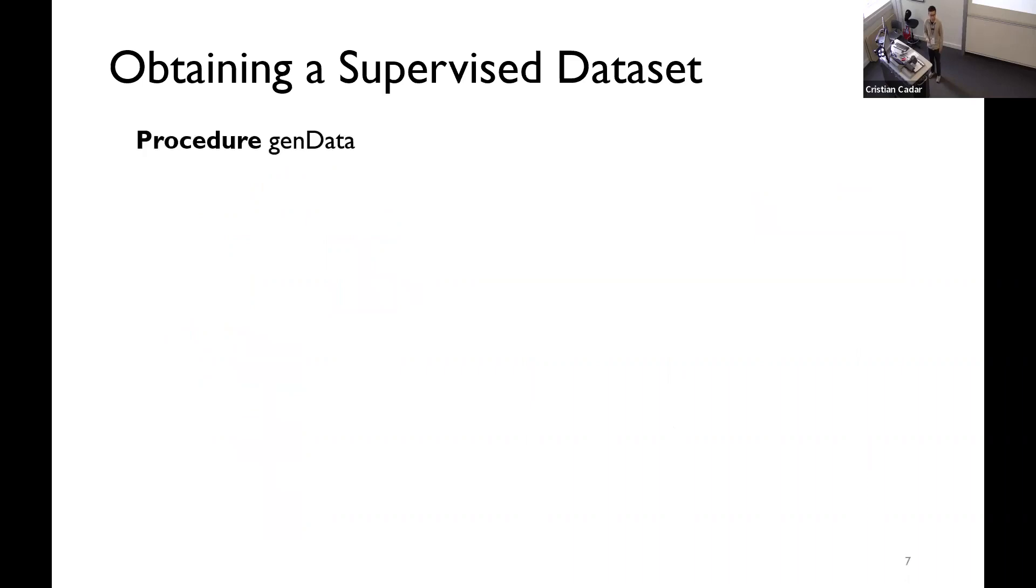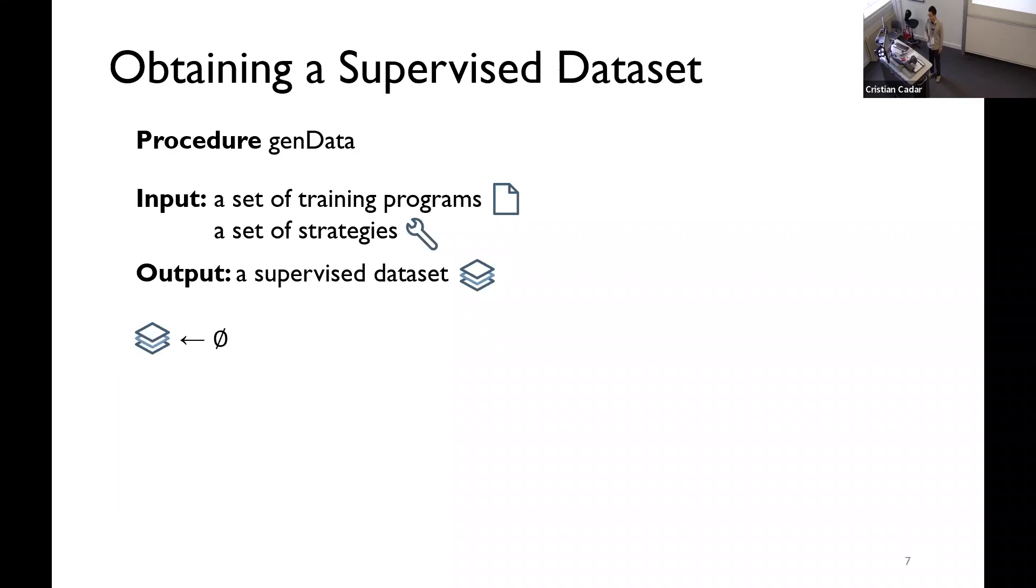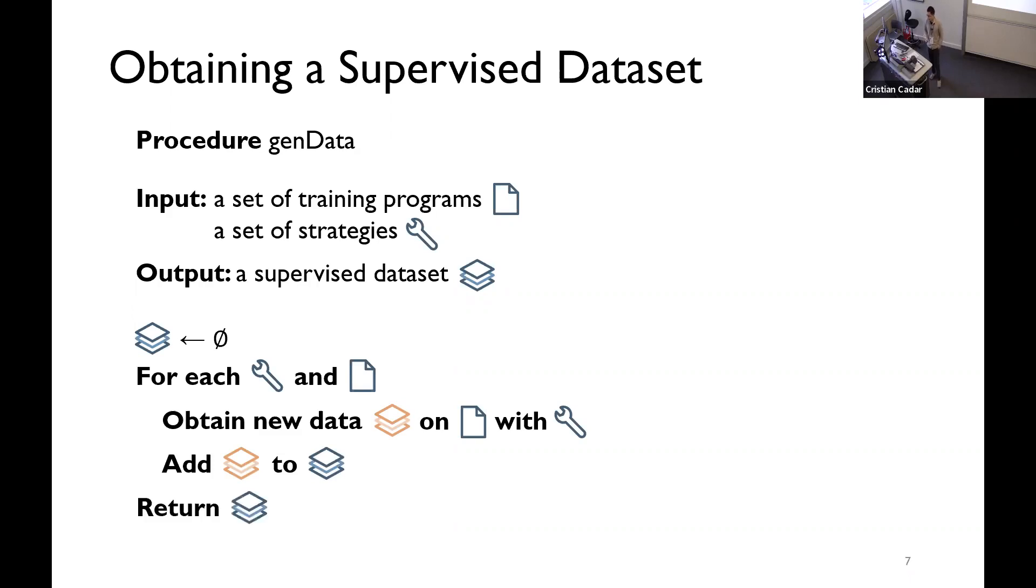Now we show how to obtain a dataset, training datasets, for one program. We summarize this in algorithm now. The algorithm is called GenData. It takes a set of training programs and set of strategies for running the program. The output is a supervised dataset. Initially, we set the supervised dataset to an empty set. And, for each strategy and each program, we run symbolic execution to obtain new supervised data with the steps we just talked about. We add this dataset to the result dataset. And, we just return the result dataset in the end.